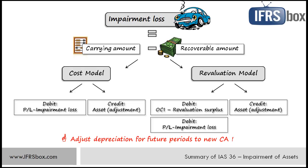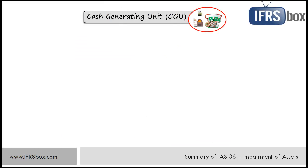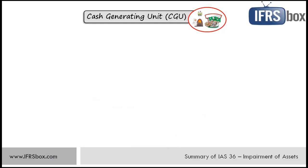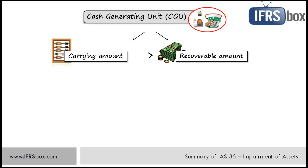Sometimes it's not possible to determine recoverable amount for an individual asset — particularly when value in use is very different from fair value less costs to sell, and at the same time it's not possible to calculate value in use for the individual asset because it does not generate cash inflows largely independent from others. This brings us to the concept of a cash generating unit (CGU) — the smallest identifiable group of assets that generates cash inflows that are largely independent of the cash inflows from other assets or groups of assets. Analogically to individual assets, an impairment loss for a CGU arises when its carrying amount exceeds the recoverable amount of the CGU.